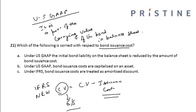So let us look at the options. Under US GAAP, the initial bond liability on the balance sheet is reduced by the amount of the bond issuance cost. This is incorrect, because it is not reduced — it is a part of the carrying value.